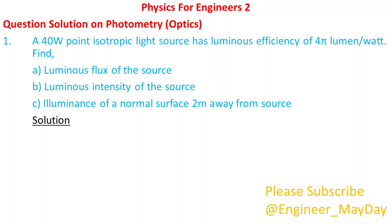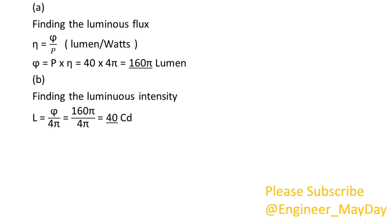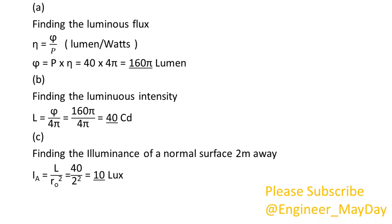Solution. Given: radiant flux P equals 40 watts, luminous efficiency η equals 4π. Finding the luminous flux: Φ equals 160π lumen. Finding the luminous intensity: I equals 40 candela. Finding the illuminance of a normal surface 2 meters away: E equals 10 lux.